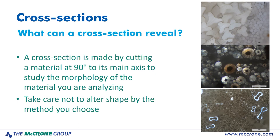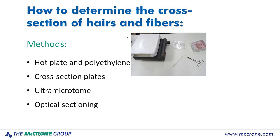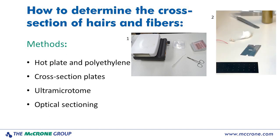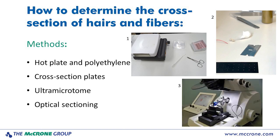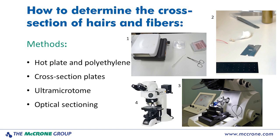Today I am focusing on hairs and fibers, but you could use these methods for other materials just as easily. The main concern for any cross-section method is that you are careful to not alter the shape of the material that you are trying to analyze, especially if you are hoping to get accurate measurements. The four methods I am going to discuss are: how to use a hot plate and polyethylene to embed materials for cross-sectioning, how to use cross-section plates, an ultra-microtome for ultra-thin sections, and how to visualize cross-sectional shape optically. So I am presenting three physical sectioning techniques and one optical.